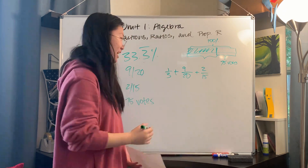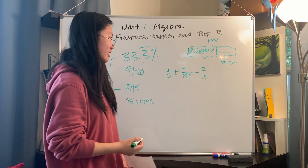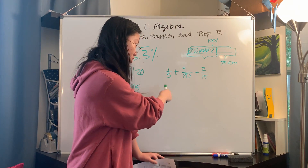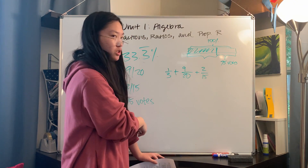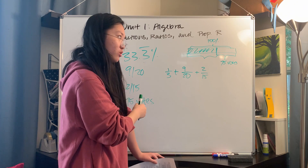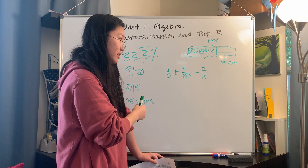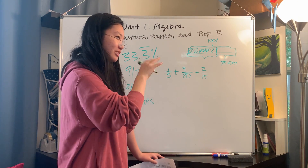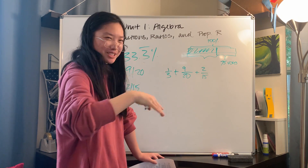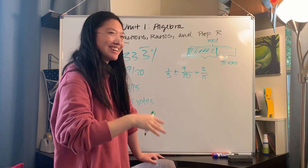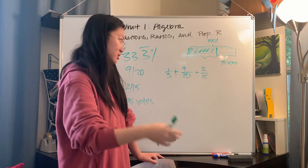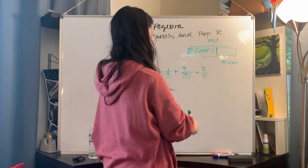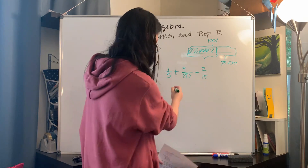33.3% repeating is 1/3, plus 9/20ths, plus 2/15ths. To add fractions, you want the denominators to all be the same, so we're going to find the least common multiple between 3, 20, and 15.